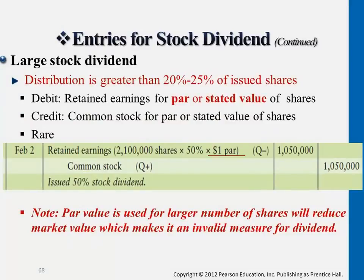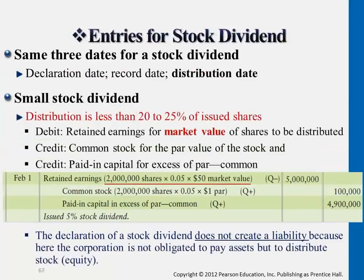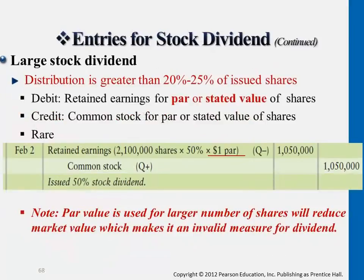The reason we don't use market value for large stock dividends is that when a company issues 50% of its original shares — say 500 more shares for every 1,000 outstanding — this significant increase in shares is likely to reduce the market price substantially. So we can't reliably use market value; instead, we just use par value. For small stock dividends, we used $50 market value, but for large stock dividends we use par value because it's very hard to measure where the market price will end up after such a significant stock dividend issuance.